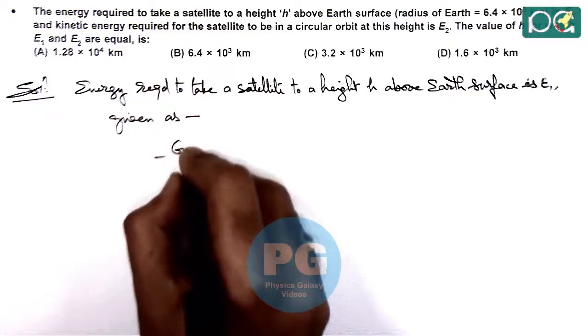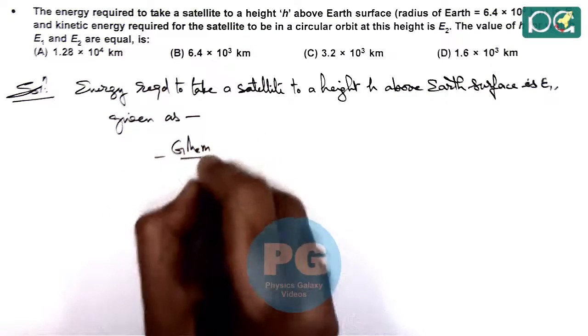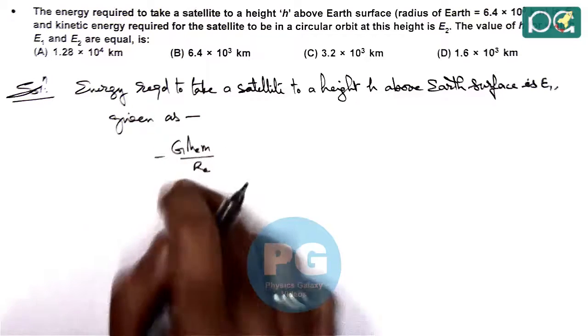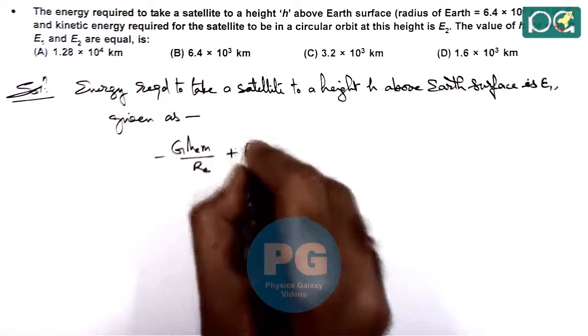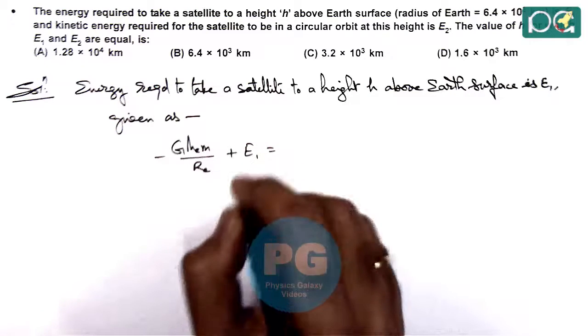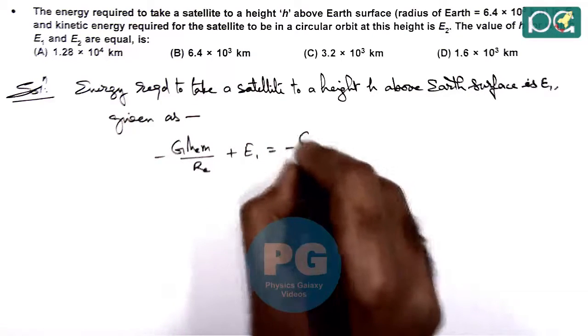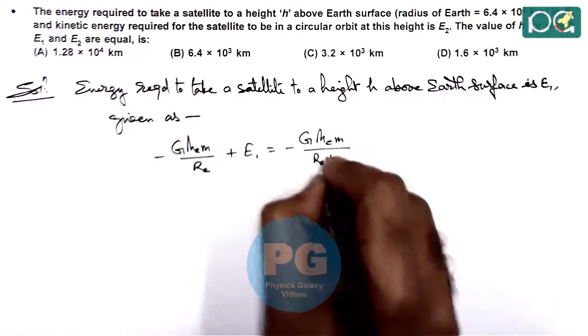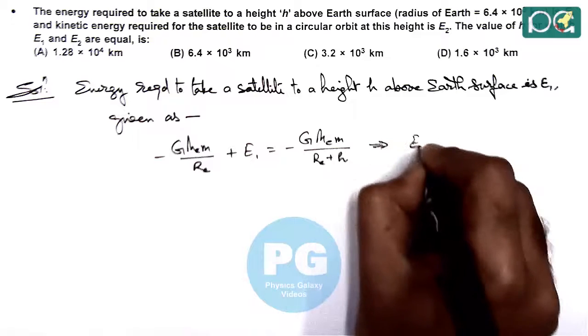Minus GmEm/Re is the energy of a satellite on the surface of Earth, plus E1 equals energy at height H, which is minus GmEm/(Re+H). This gives us the value of E1